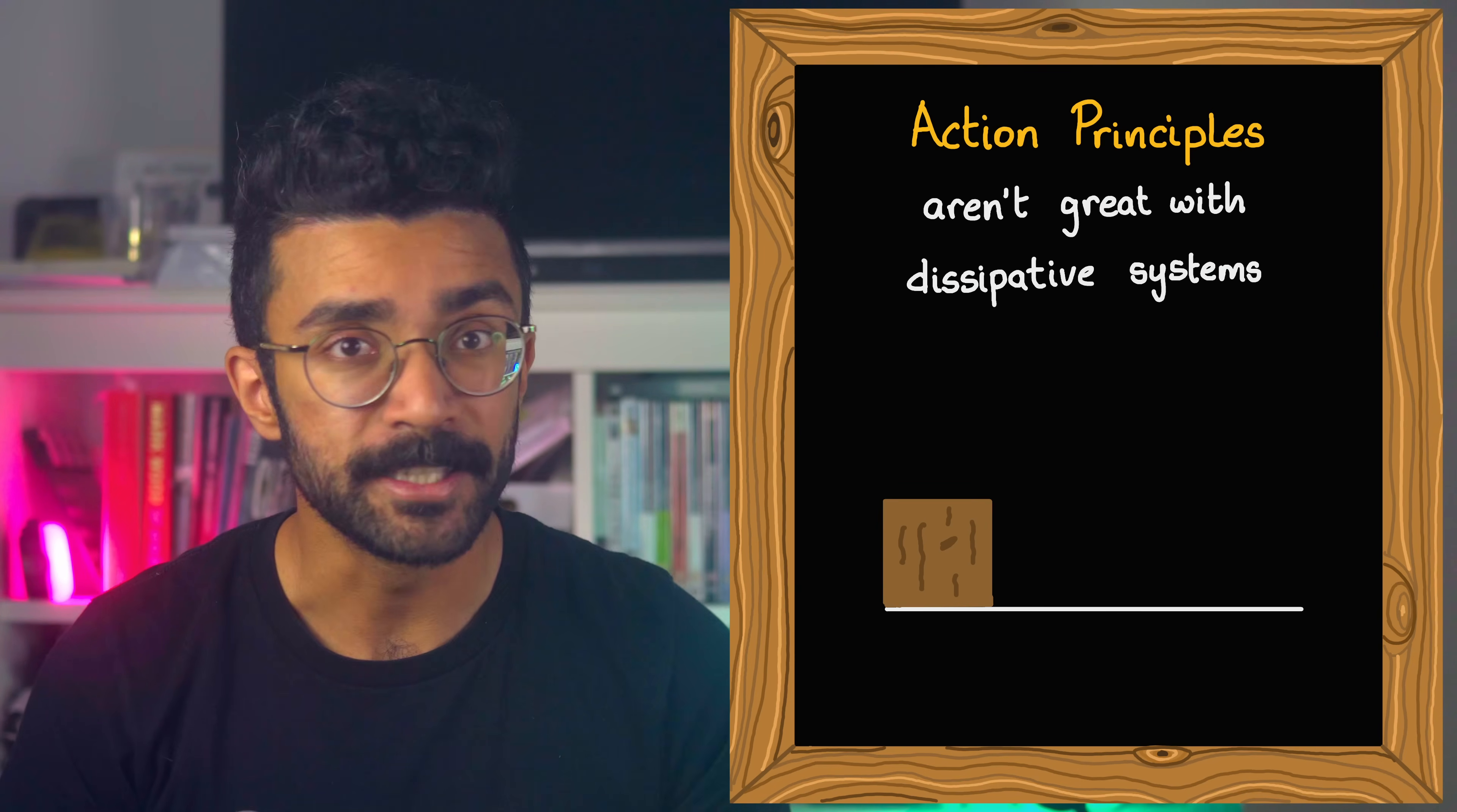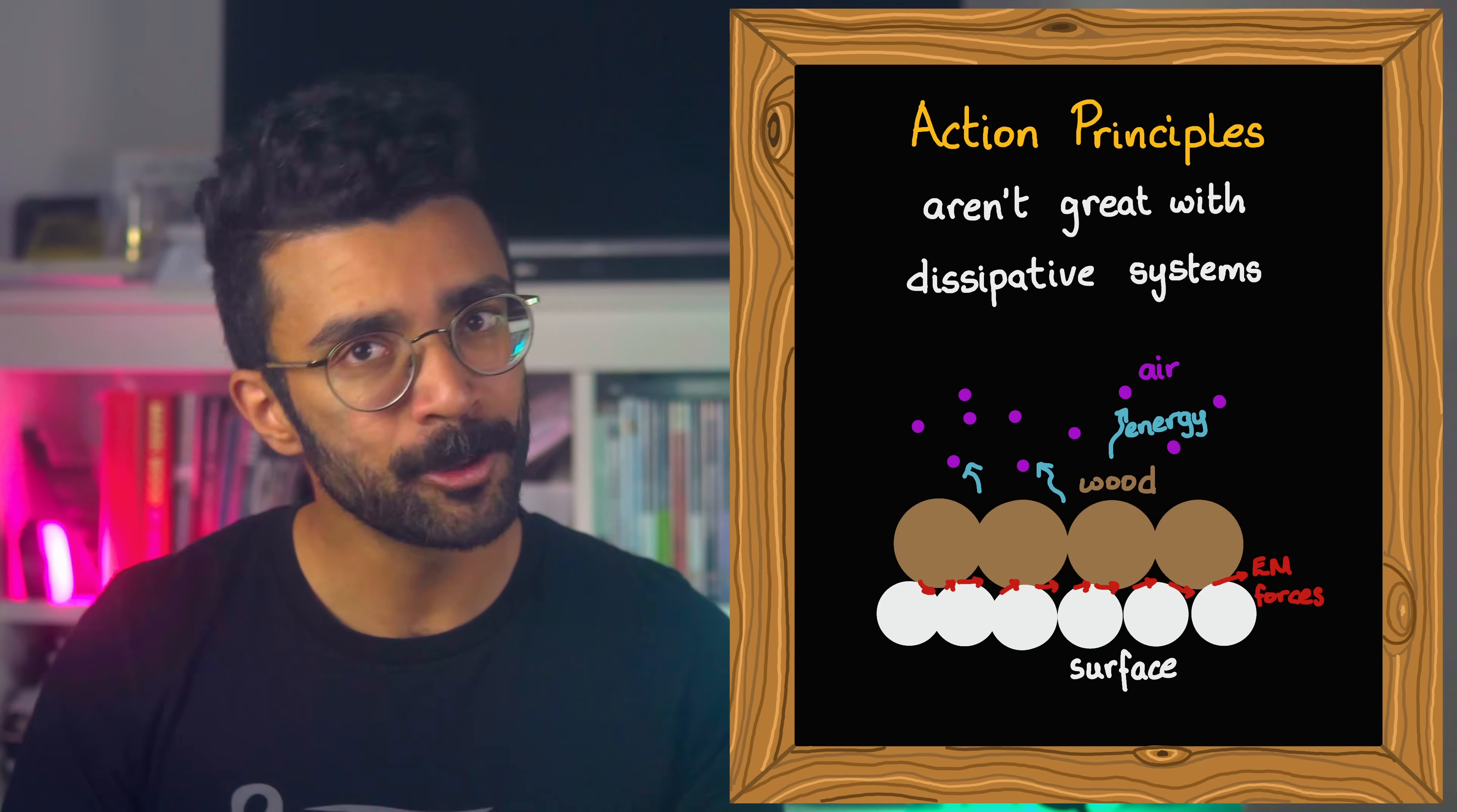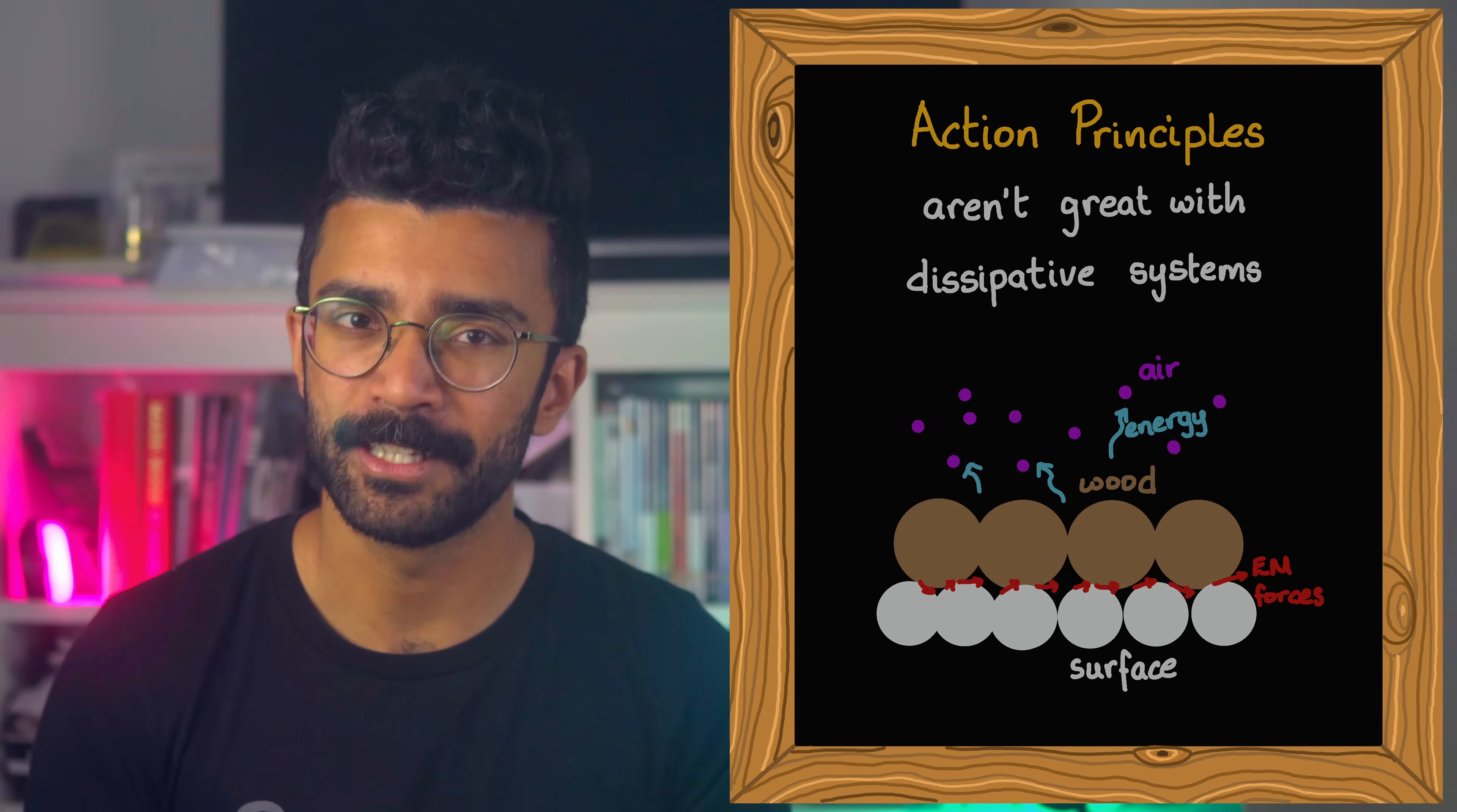Luckily, however, if dissipative forces are taking energy out of the system, that energy is being transferred to another system. For example, friction slowing down a rolling object results in that energy being transferred as heat to the universe around it. So if we expand our idea of what the system is to include this change, and we look at friction on a small scale, and realize that it's just caused by electromagnetic interactions between particles, then technically the action principle works again. It's hard to do mathematically, because you have to study all of the particle interactions and account for everything going on here, but in theory, it's doable.